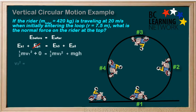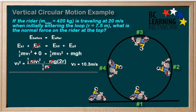And with a little rearranging, we can solve for v3, the velocity at position number three, the top. Now that we know the velocity at our point of interest, we can move forward and analyze the forces and accelerations.